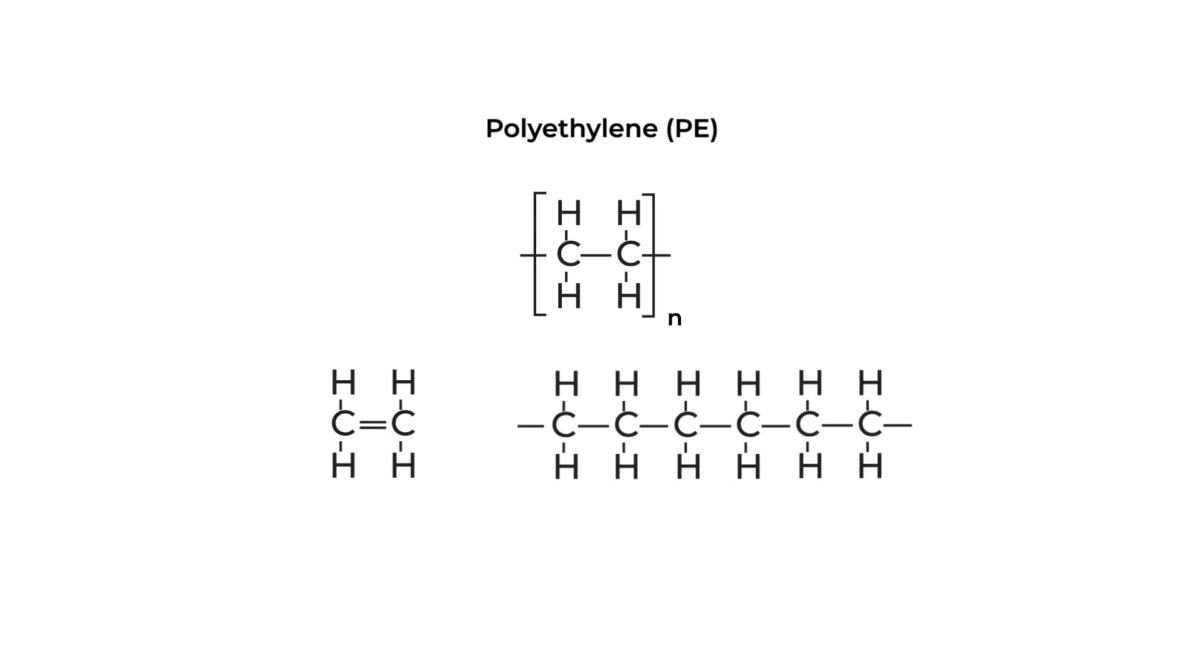Sometimes, a polymer chain might be written out like this, where our repeat unit is in brackets with subscript n. This n indicates the length of our chain.